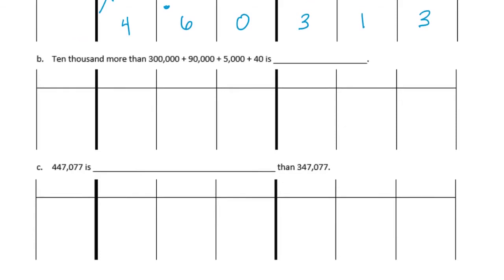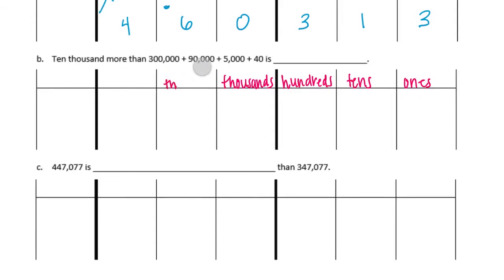So the next one, we're going to start by labeling the place value chart again. Oops, that should be 10,000s, not 100,000s.